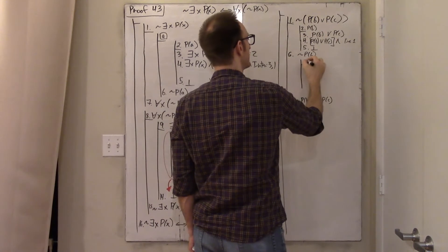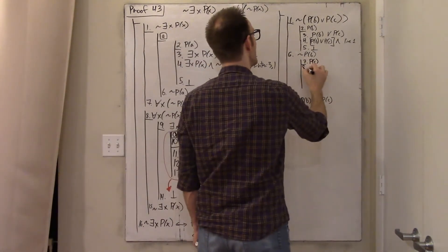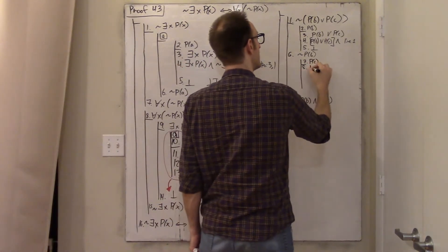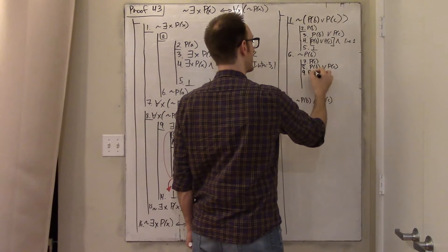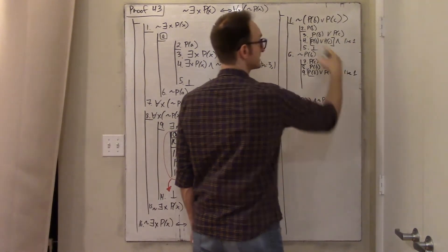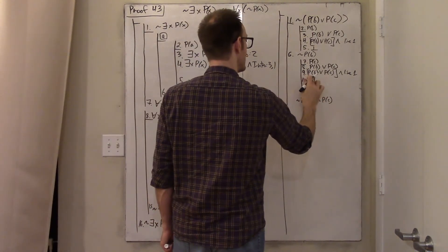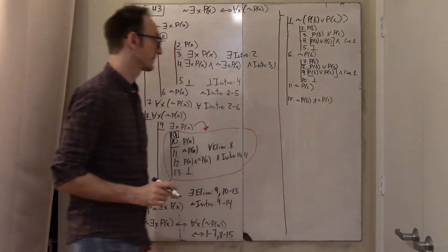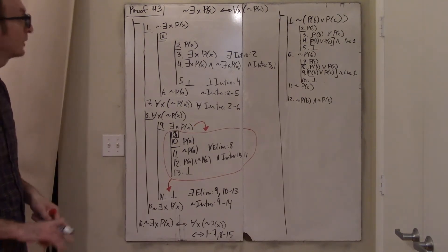Suppose c is pretty. I intentionally weaken by oring on p(b) to get p(b) ∨ p(c), which contradicts line one — another bottom. From that contradiction I conclude c is not pretty, then conjoin them. That's the proof we did about a month ago.